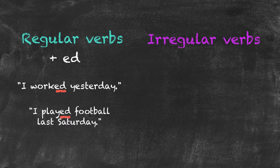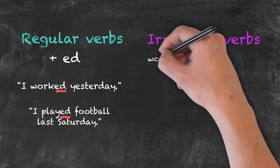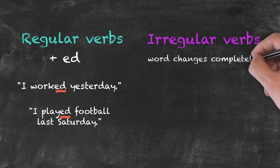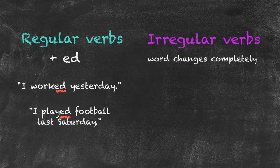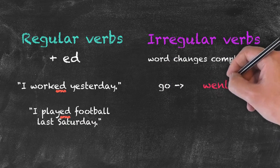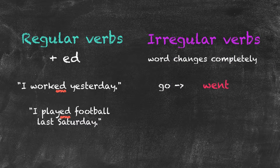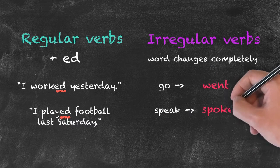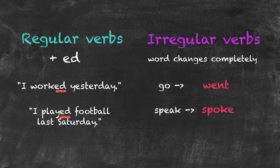With irregular verbs, in order to conjugate or change the verb into the past, we have to change the word completely — we cannot simply add ED. So 'go' goes to 'went': 'I went to the store yesterday.' And 'speak' goes to 'spoke': 'I spoke at a conference last Saturday.'